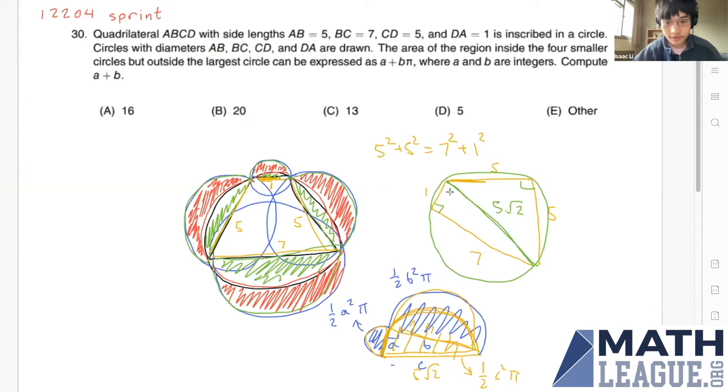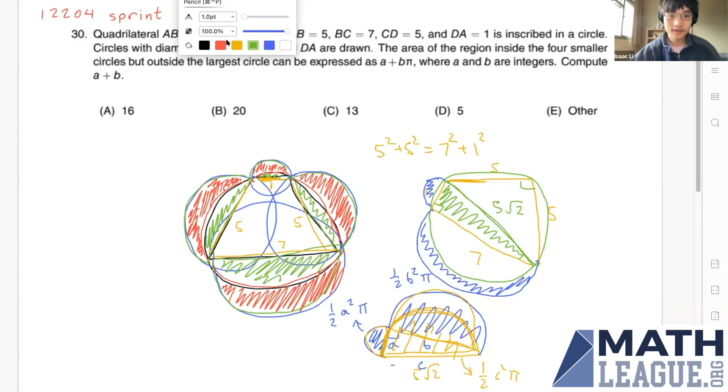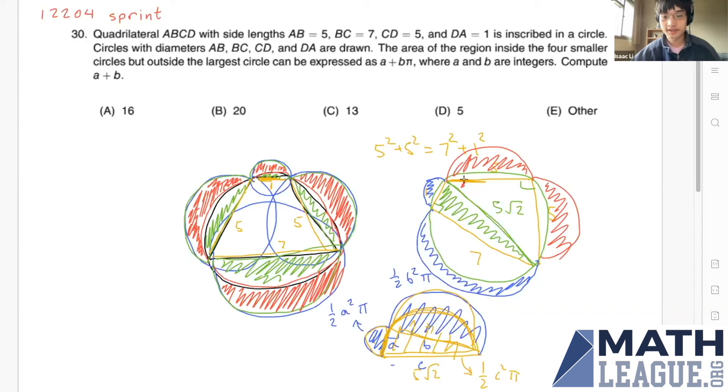So what that means is that if we draw the semicircle here and the semicircle here, then the area of these two regions here is actually equal to the area of this triangle here. Isn't that surprising? So we can do the same thing with the other half of the circle here. These two red circles here outside of the large circle has the same area as this triangle here. So it turns out the area of these four circles outside of this larger circle is just the area of the quadrilateral. And this quadrilateral has the same area as this quadrilateral, which is just these two triangles like this.